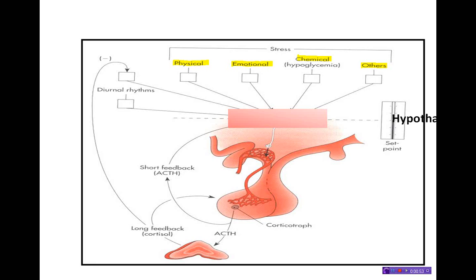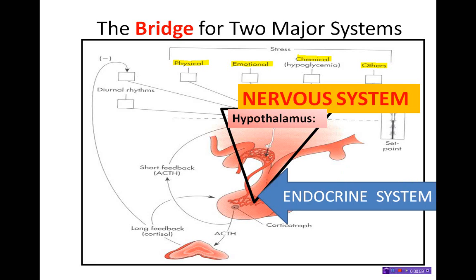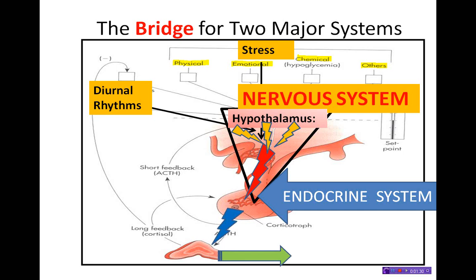Recall that the hypothalamus is the bridge between two major systems — the nervous system and the endocrine system — and it receives a continuous barrage of sensory information from various sources, which it evaluates and integrates, and determines whether the body is drifting away from homeostasis. If so, it will send hypothalamic hormones to the pituitary gland, which in turn will send the appropriate pituitary hormones to target glands or target tissues, which can then make physiologic responses and adjustments to reclaim homeostasis.